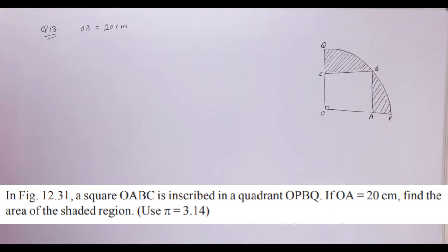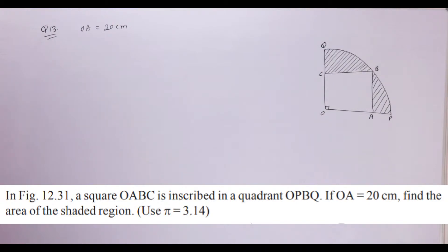Question number 13. In the figure, a square OABC is inscribed in a quadrant OPVQ. If OA is equal to 20 cm, find the area of the shaded region. Use pi equal to 3.14.